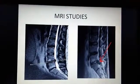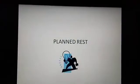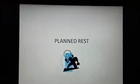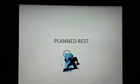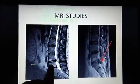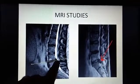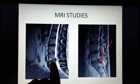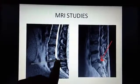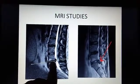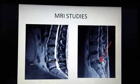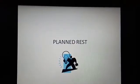Depending on the direction of the disc prolapse, we need to plan physiotherapy management accordingly. One of the most important aspects is planned rest — not just rest, but rest in a specific position. If the disc is protruding posteriorly and is still in a jelly-like state, we need to think about which position will help the disc return to its original position.